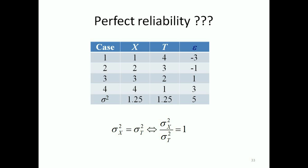Have a look at this. The true scores are 4, 3, 2 and 1 with the same variance 1.25 but the measurements are 1, 2, 3 and 4 with the same variance 1.25. Now that also gives us a quotient of the two variances equal to 1. But is this perfect reliability?